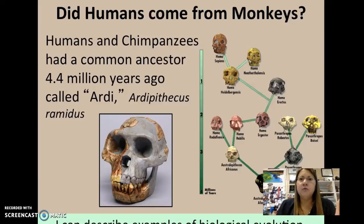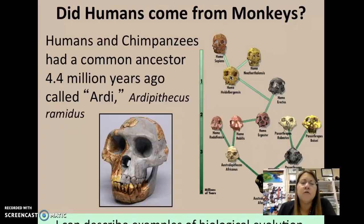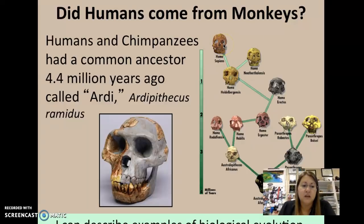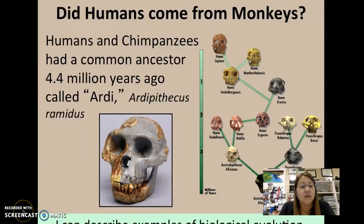A lot of people say evolution claims that humans came from monkeys — and that is a myth, a misconception. Humans and chimpanzees, and other members of the monkey family, had common ancestry over 4 million years ago. Ardi — a nickname for Ardipithecus ramidus — is an organism scientists have discovered from which humans and other organisms in the family tree of apes, chimpanzees, and monkeys share similar DNA from a common ancestor over 4 million years ago. Humans did not come from monkeys. This illustration shows the evolution of what we think of as cavemen — your ancestors — and you can see how facial structure changed through time based on the archaeological evidence scientists have uncovered. Thanks, super scientists.